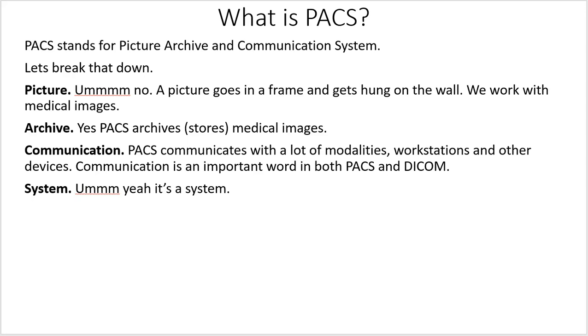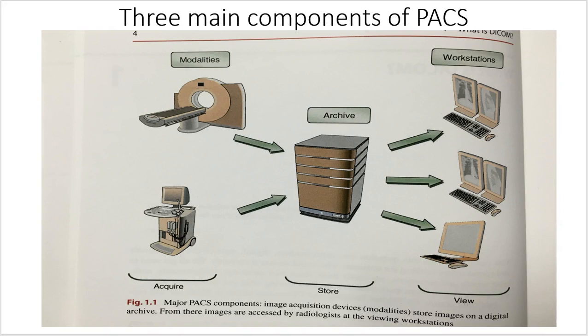There are three main components of a PACS system. The first main component is the modalities — the ultrasound cart, the CT scanner, the x-ray machines, the portable x-ray machines. The modalities acquire the images by scanning patients, and then they send them along. The second component of PACS is the archive, where the images are stored.